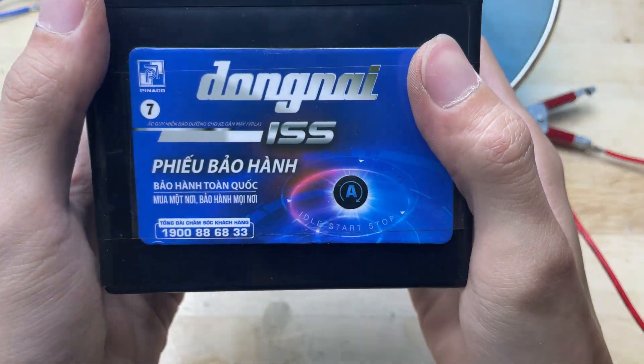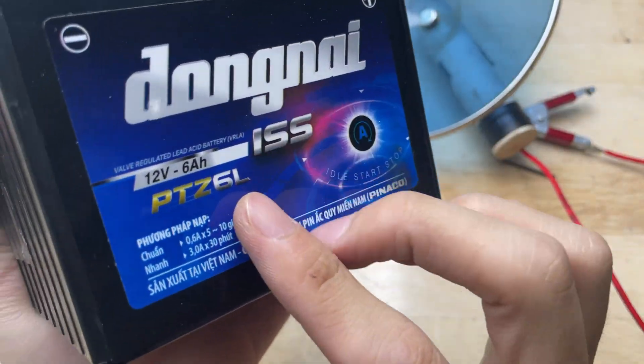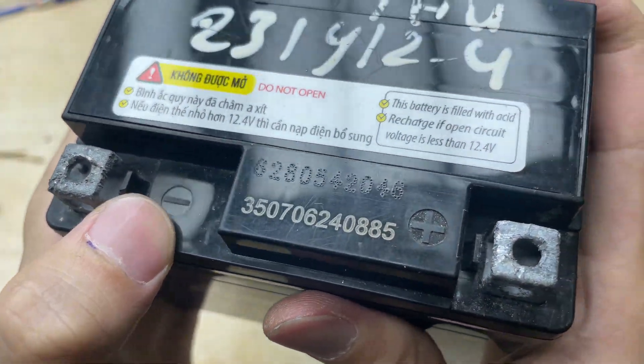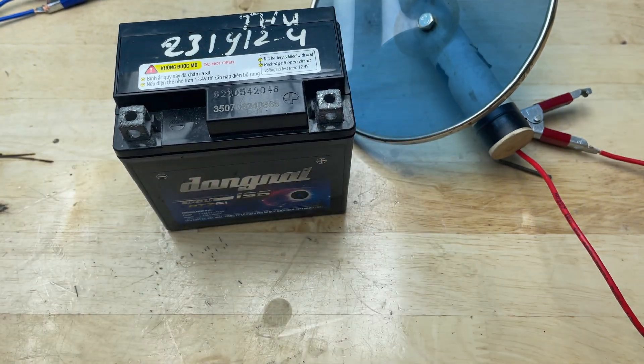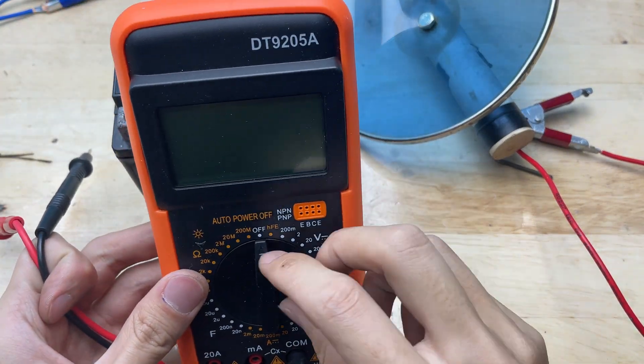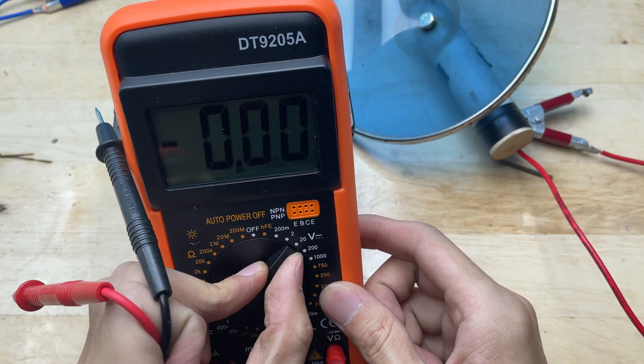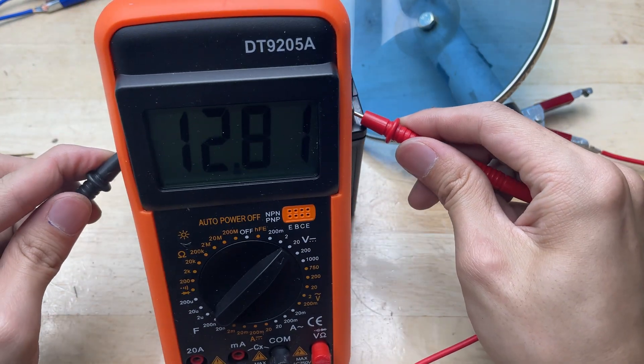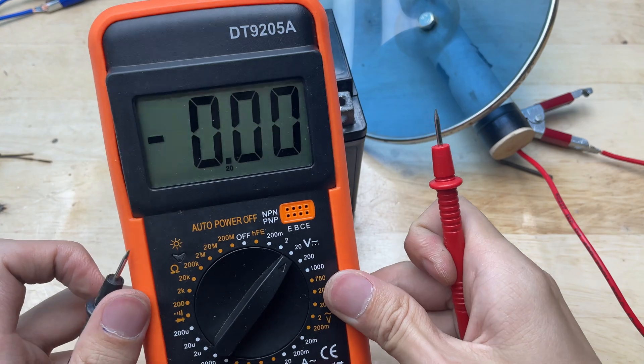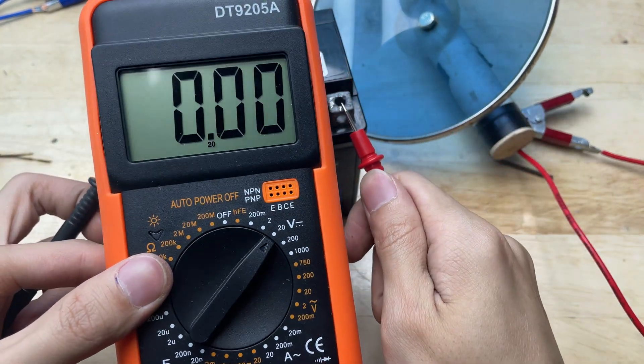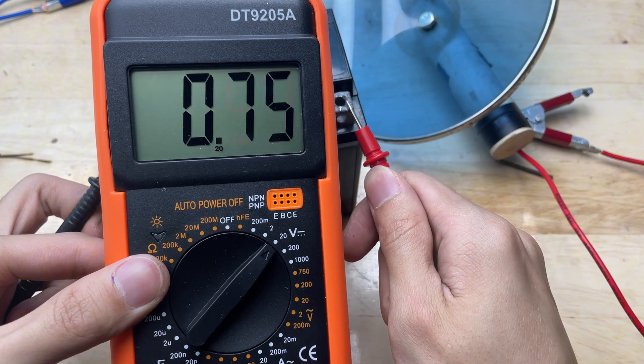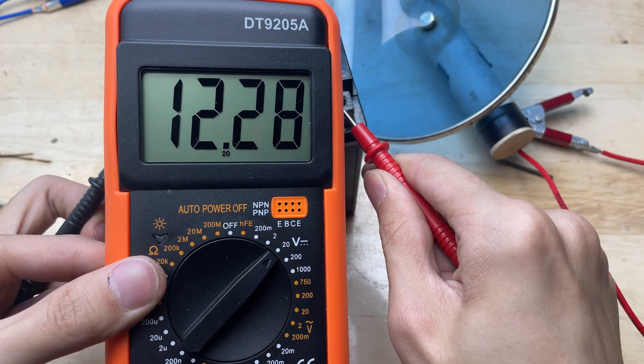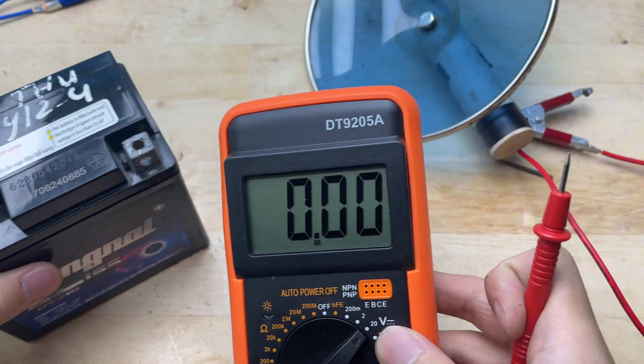Now, let's prepare a motorcycle battery. It has a voltage of 12V, which is enough to power this welding machine. Connect the red wire to the positive terminal and the blue wire to the negative terminal.